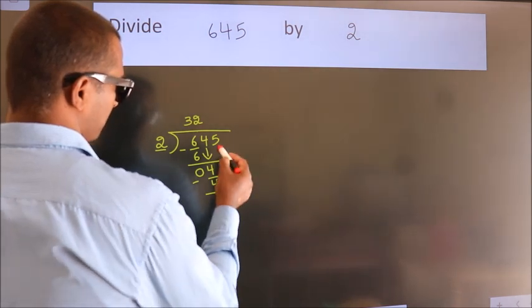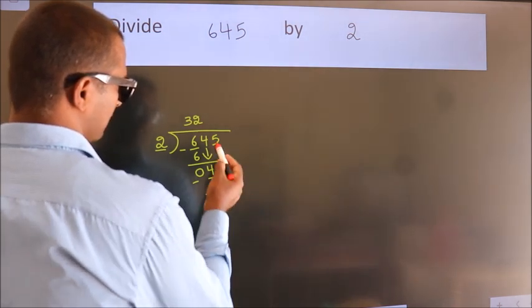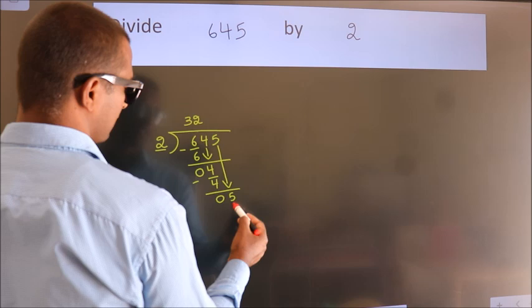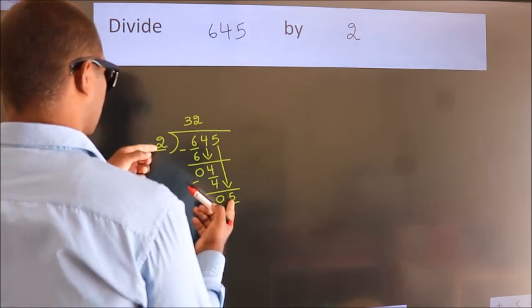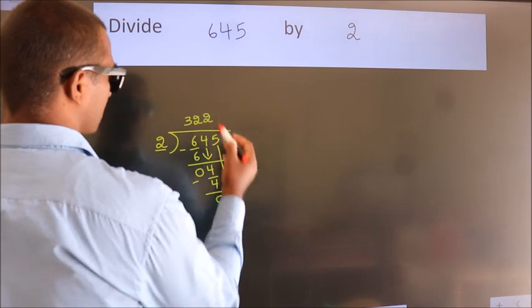After this, bring down the beside number. So, 5 down. A number close to 5 in 2 table is 2 twos, 4.